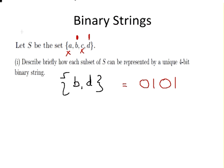Another example would be the empty set. So in this particular case none of the elements would be present. So in this case: 0 for A, 0 for B, 0 for C, and 0 for D.